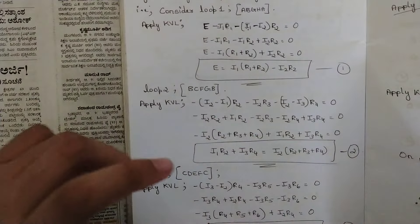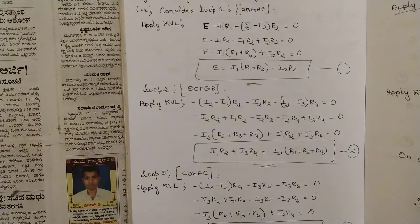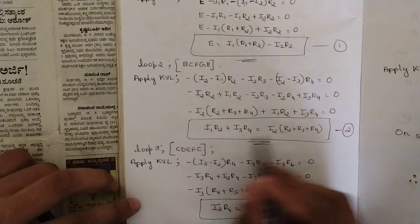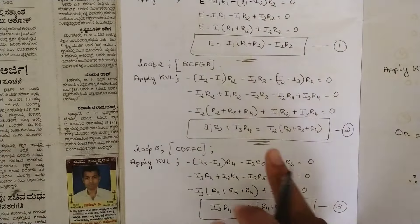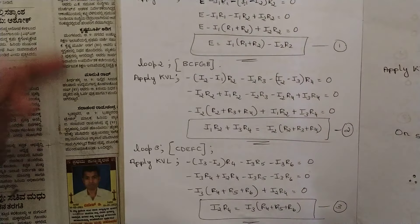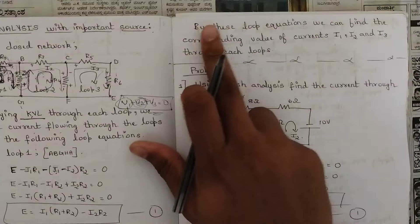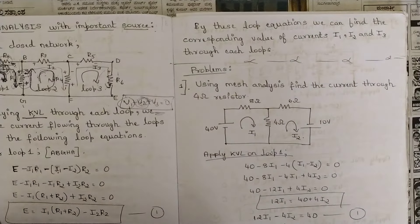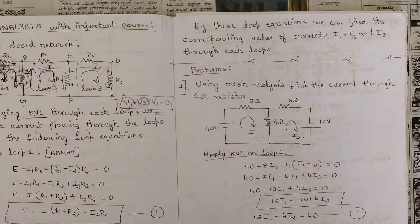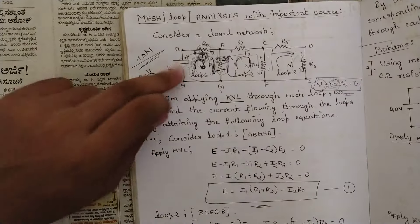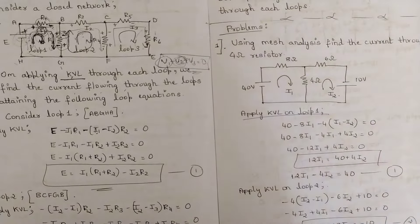You can copy down and analyze the equations for loop 2 and loop 3 just as I explained. Like this, you should arrive at three equations. Here we write the values of currents and resistances, and when we solve the actual problem we will have the resistance values. By using these three loop equations we can find the corresponding values of I1, I2, and I3 — I'll show you how while solving the problems using a calculator.